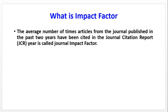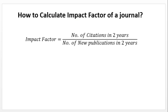Now let's look at the impact factor. The impact factor is the average number of times articles from the journals published in the past two years have been cited in the Journal Citation Report, and is called the Journal Impact Factor. Aslan alfaz mein kahein to do saal mein citations kisi journal ke hue hain aur do saal mein us ne jo papers publish kiye hain. Impact factor = number of citations in two years divided by number of new publications in two years.